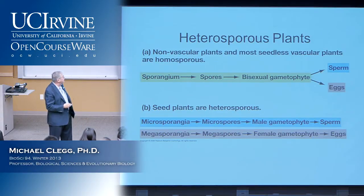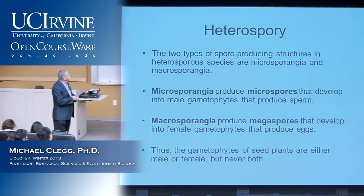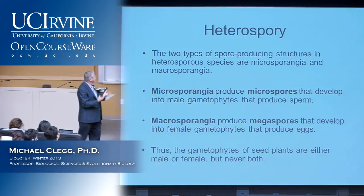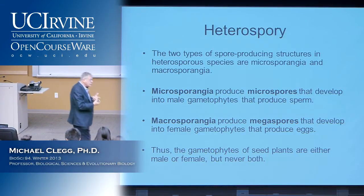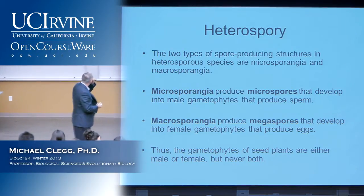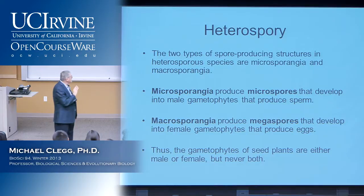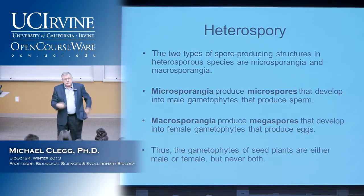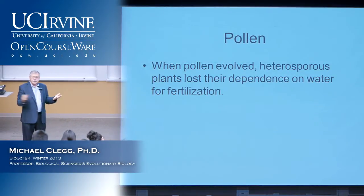So in the heterosporous type, there are two kinds of spore-producing structures: microsporangia, which produce sperm, and megasporangia, which are committed to produce eggs. The gametophytes of seed plants are either male or female, but never both. That's the complex evolution of reproductive structures in plants.